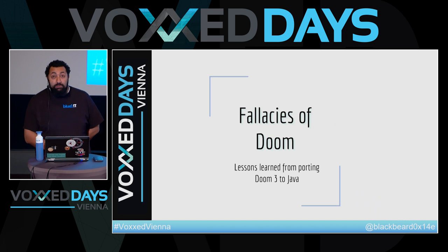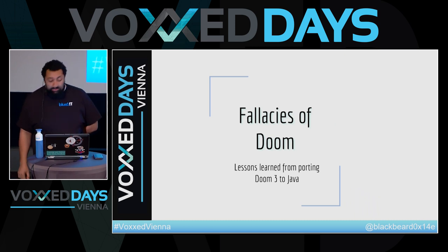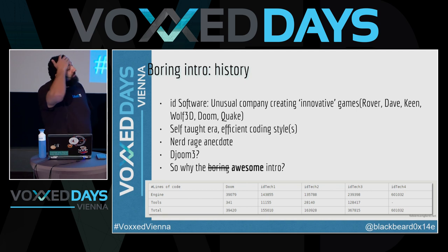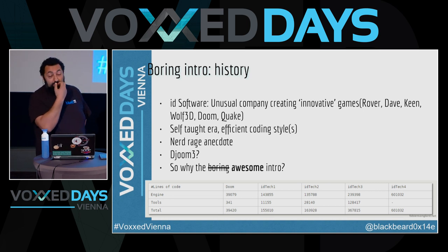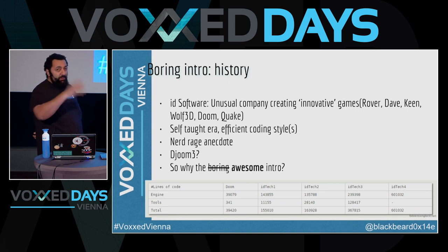All right, so welcome. My name is Mahmoud Abdel Ghani. I'm going to tell you some stuff about my project porting Doom 3 to Java. So a brief introduction about some background concerning the project. id Software is a company that created Doom — I don't work for them, unfortunately. They did a lot of cool games, and they're quite known for the first-person shooter thing: Doom, Wolf, Quake, and that kind of stuff.